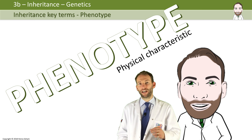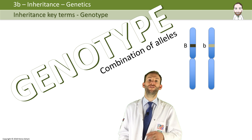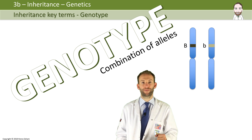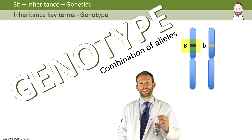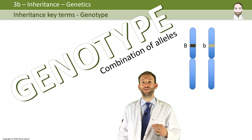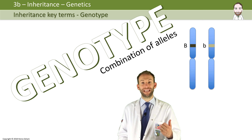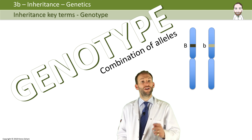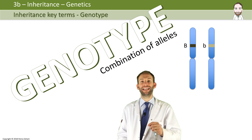The genotype is the combination of alleles that a person has that codes for that specific phenotype. The dominant allele always has a capital letter, and you use the lowercase version of the same letter to show the recessive allele. So I have one allele for brown hair, which is dominant, so I give it a capital B, and one for blonde, which is recessive, so I give that a small b. So my genotype is big B, little b.